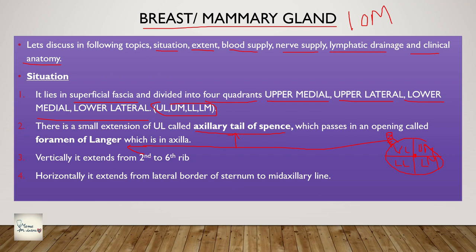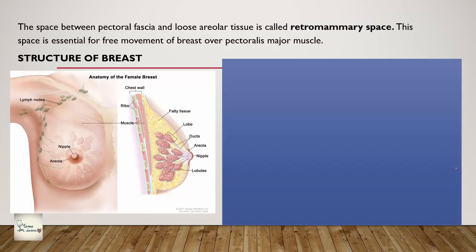In terms of extent, the breast vertically extends from the second rib to the sixth rib. Horizontally, it extends from the lateral border of the sternum to the mid-axillary line. Here you can see horizontally it extends from the lateral border of the sternum to the mid-axillary line - this is the lateral border of the sternum.